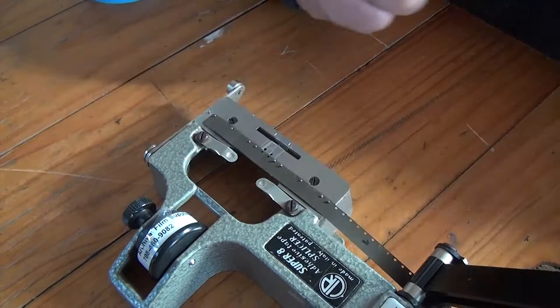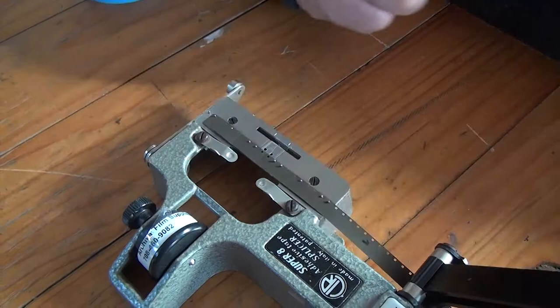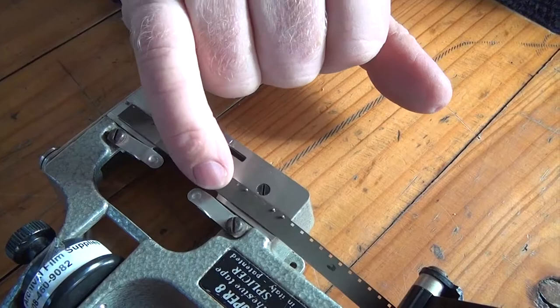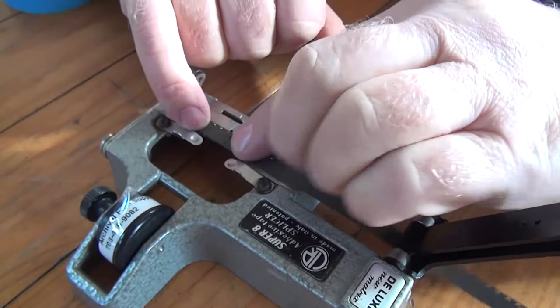Now, like the 16mm splicing situation, I need to have the emulsion side, if it's the emulsion side up on one half, it has to be the emulsion side up on the other half.